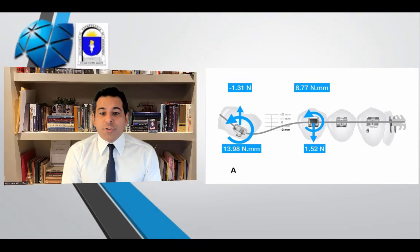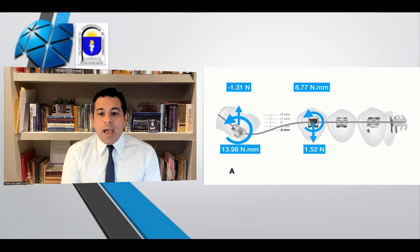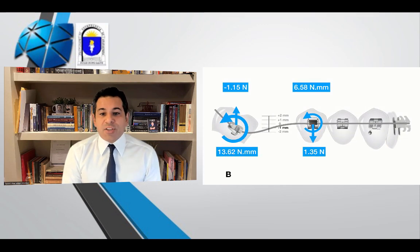When the tube was bonded two millimeters cervical to the brackets, the wire produced an uprighting moment and an intrusive force at the second molar tube. As the tube was moved more occlusally, the wire produced slightly less uprighting moment while the extrusive force decreased.